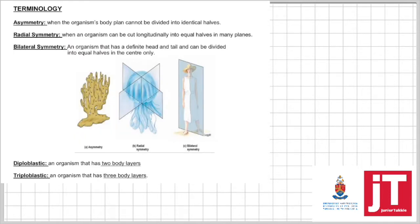The first terminology deals with symmetry. Now you get asymmetry, radial symmetry, and bilateral symmetry. If you look at the picture — asymmetry. I always teach my kids that A means the absence of. So this is an organism that does not have symmetry. You can cut this organism in any plane and you will not have equal halves. That is what asymmetry means.